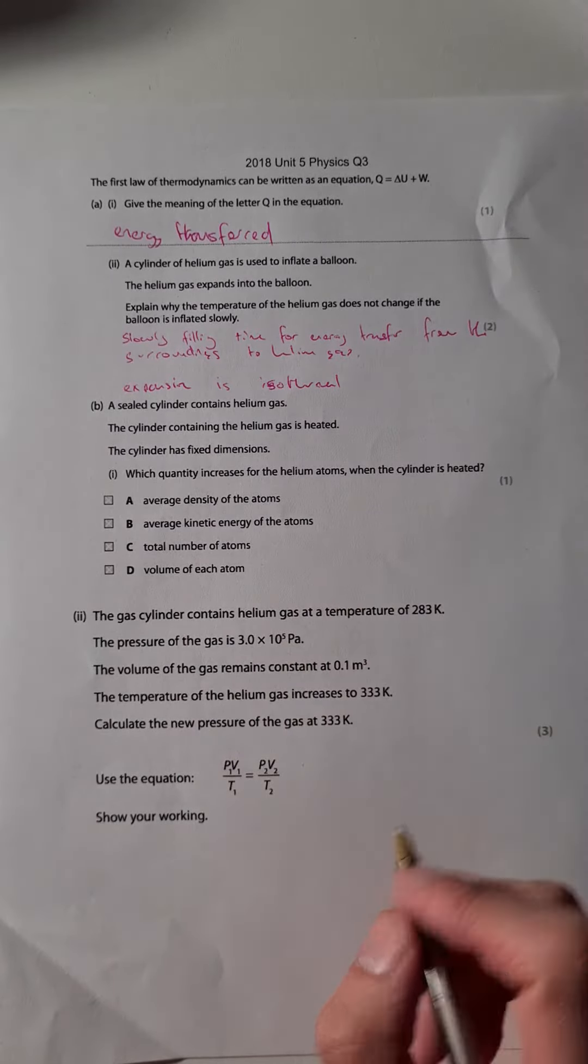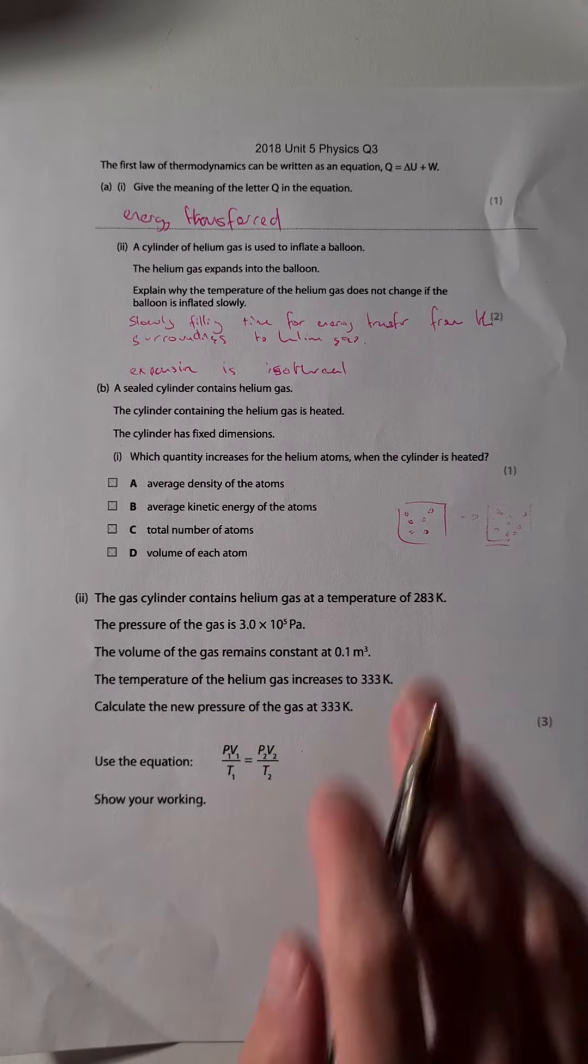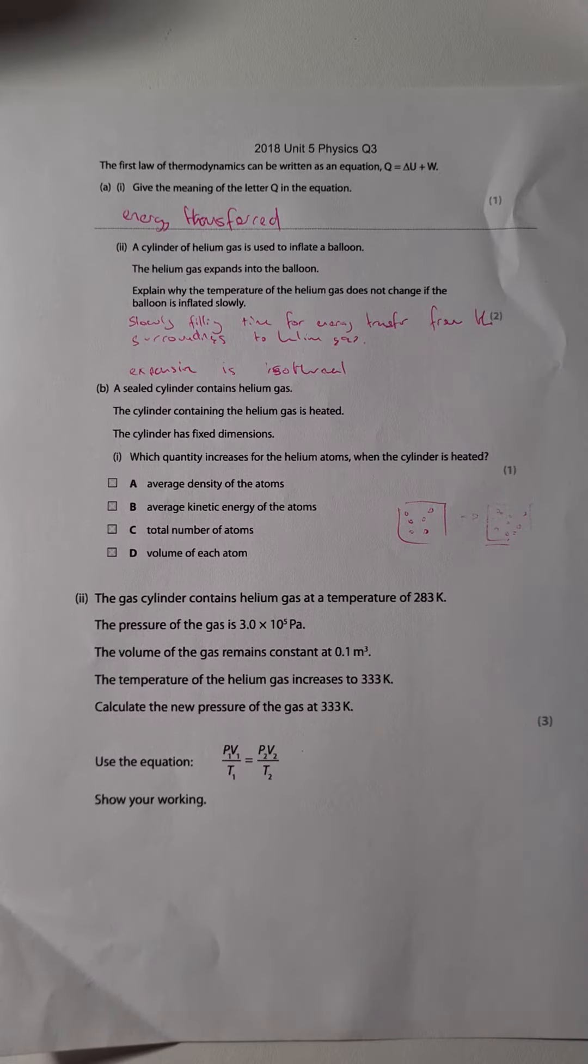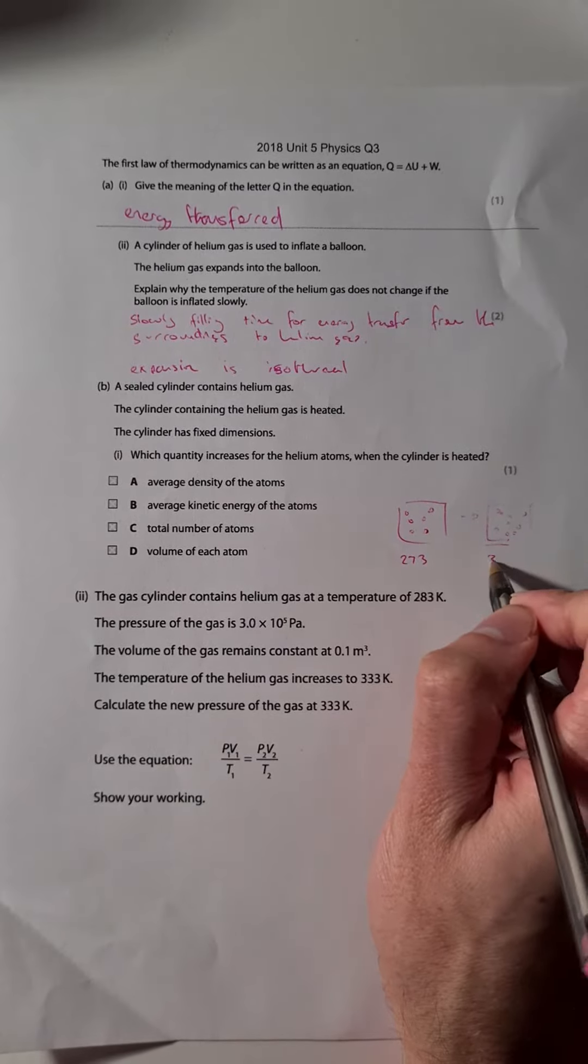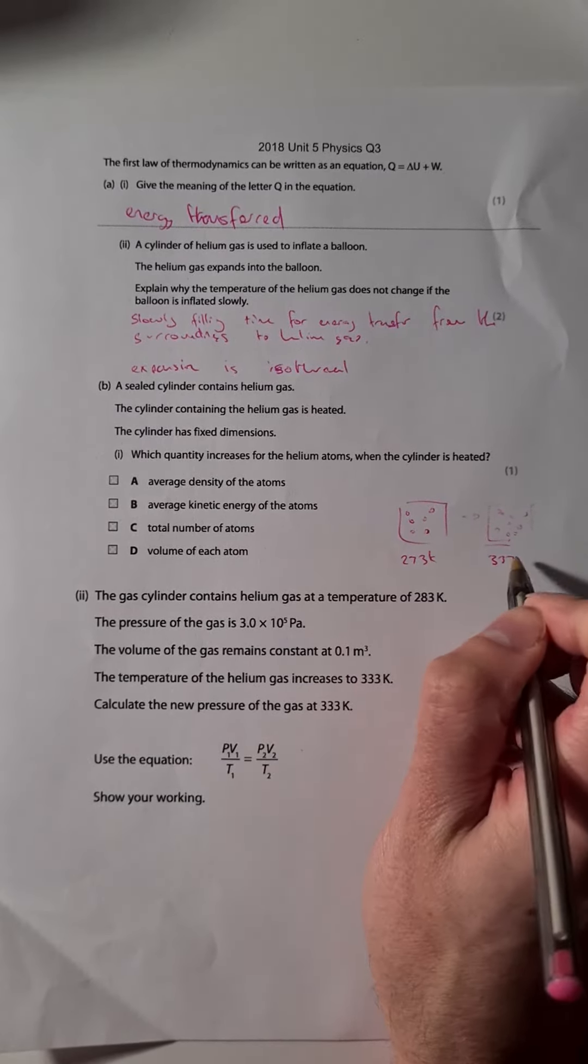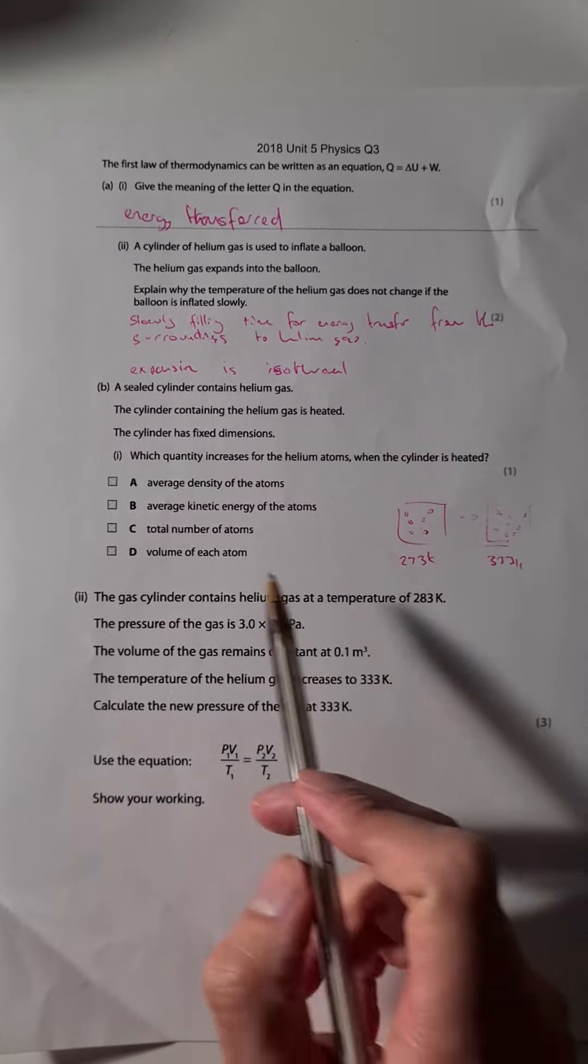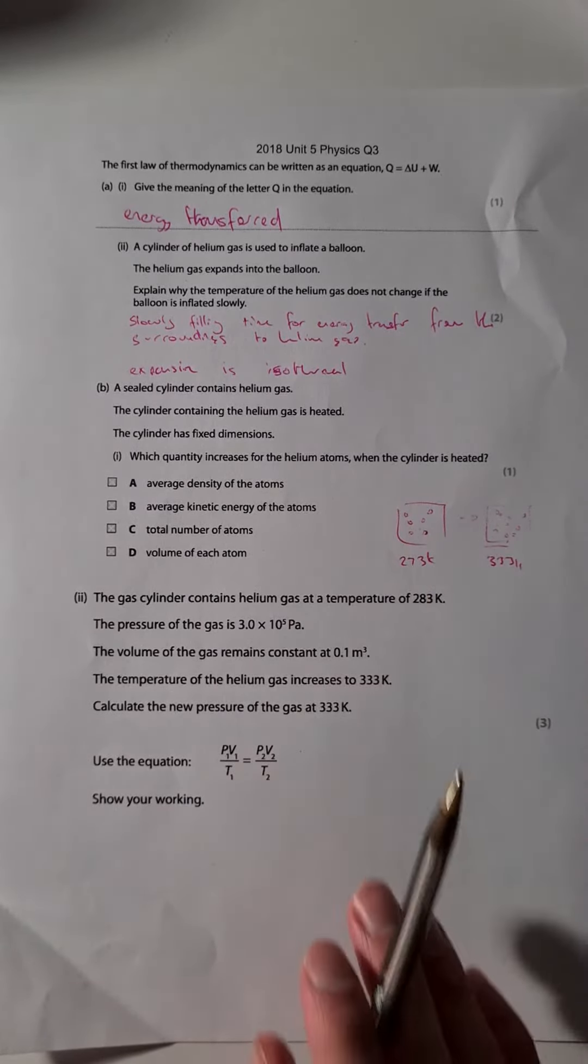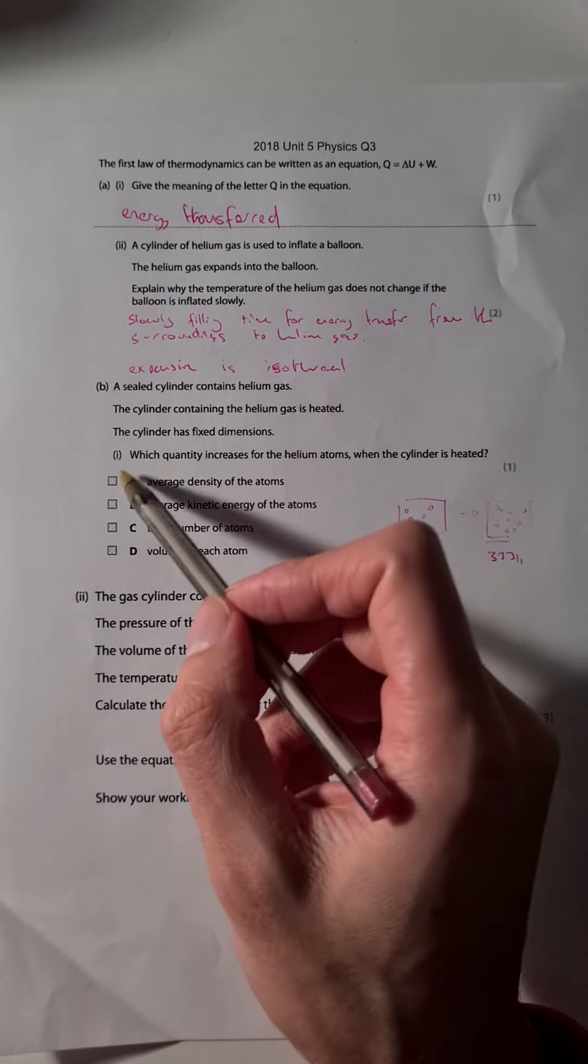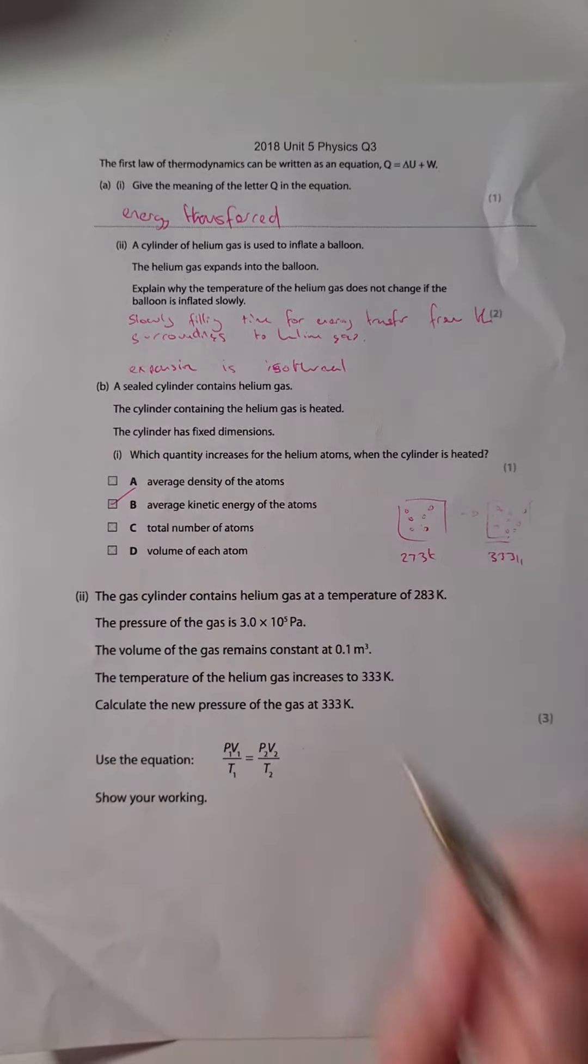The density hasn't changed - they just might be flying around a lot quicker, but the density stays the same. The kinetic energy of atoms definitely increases when we heat something up, so that's looking likely. Total number of atoms stays the same, and the volume of each atom doesn't change. There's no expansion of the atoms. So A, C, and D we can rule out, and it's going to be B.